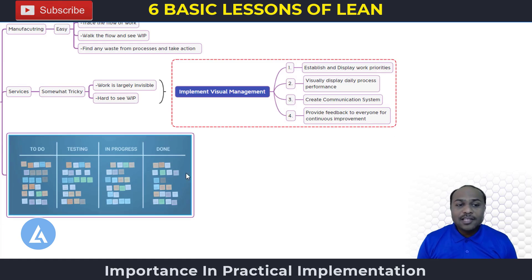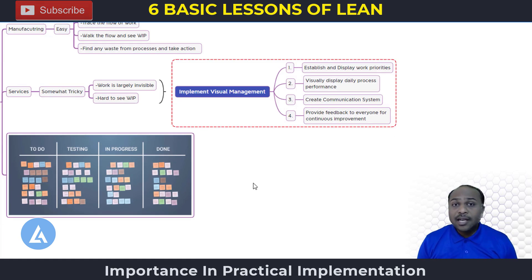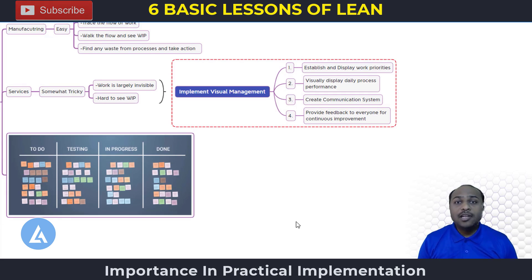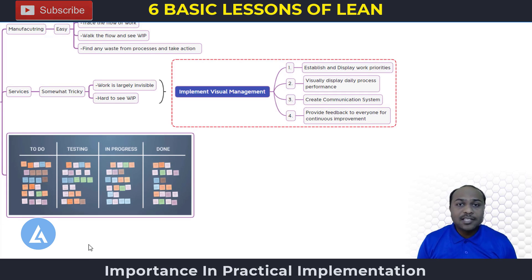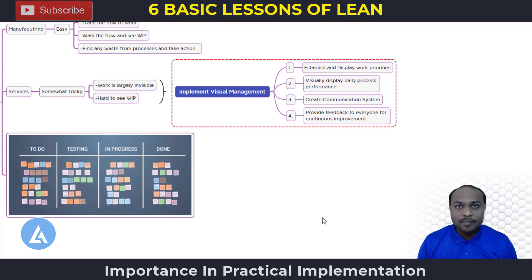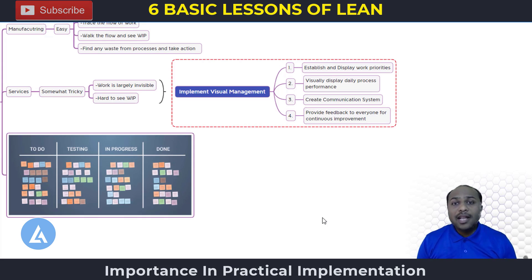The diagram shown indicates how visual management is sustained: what activities or units are going to be processed, what units are completed but in a testing phase, what units are in progress, and what units have already been completed. This helps you understand what is in process so you can take actions to reduce work in process.